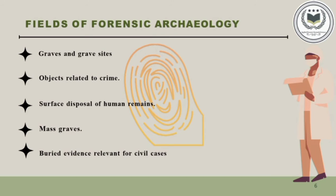The next field is surface disposal of human remains. Forensic archaeologists are usually called in to help gather evidence in cases of surface disposal of human remains. These include covering the body with tree branches, rubbish, construction materials, etc. Forensic archaeologists remove layer by layer in order to identify evidence and exclude objects that aren't connected with the crime or victim.